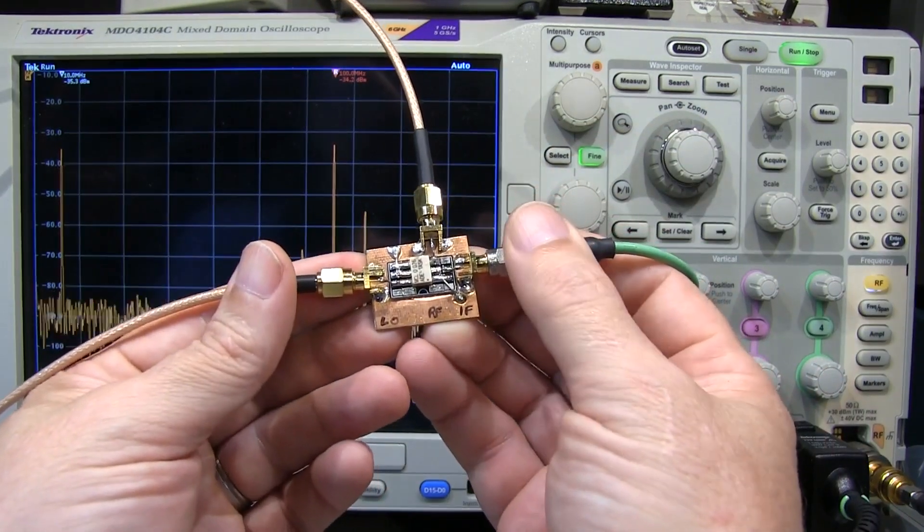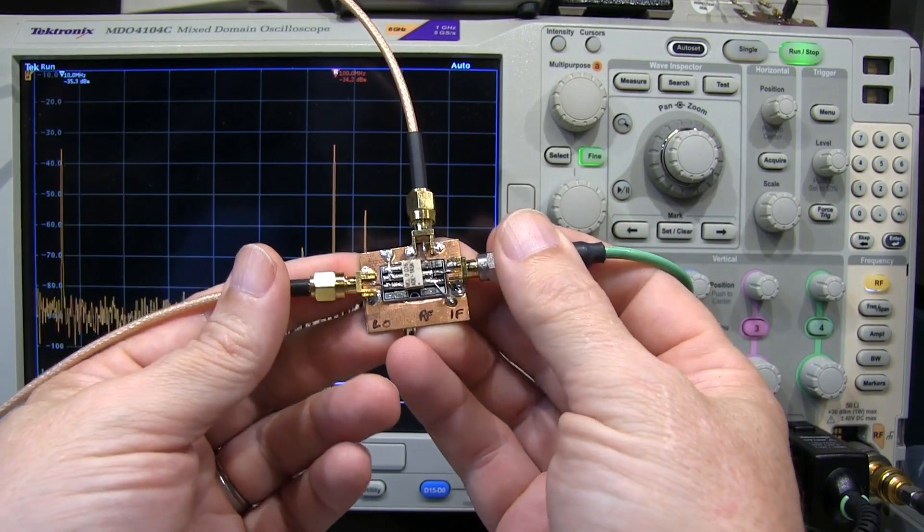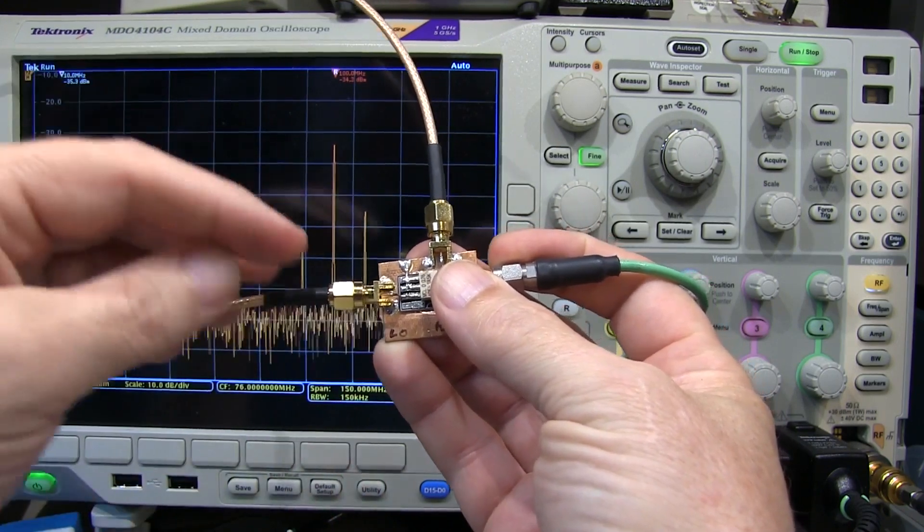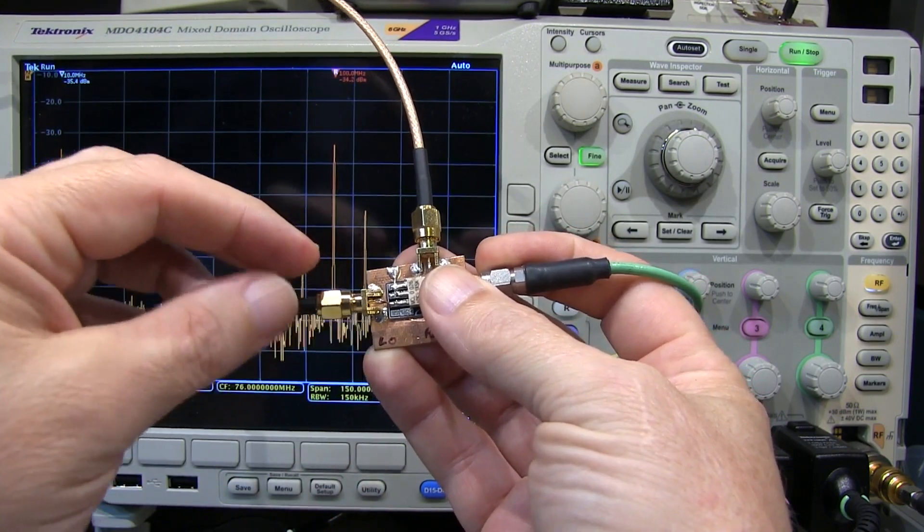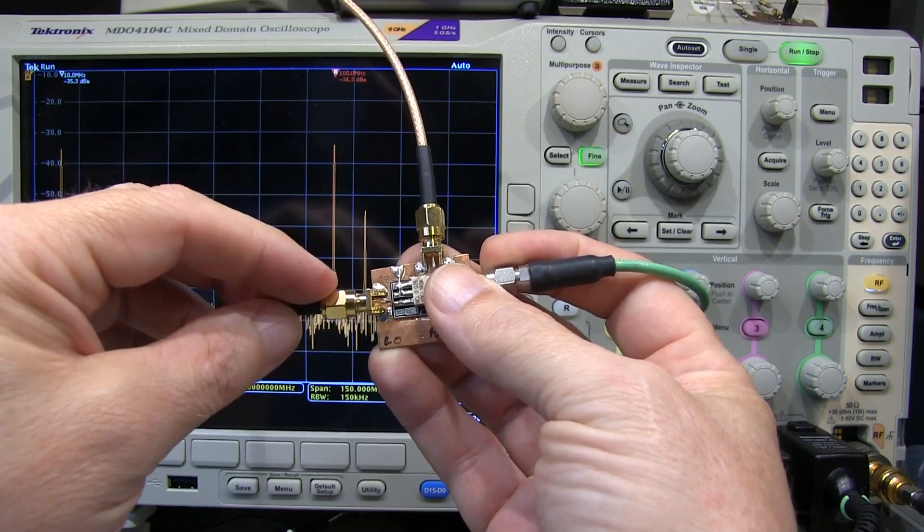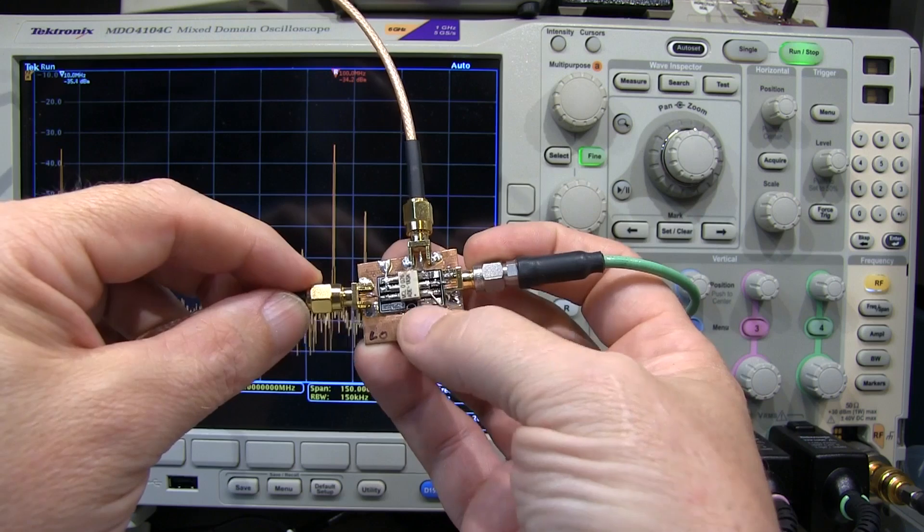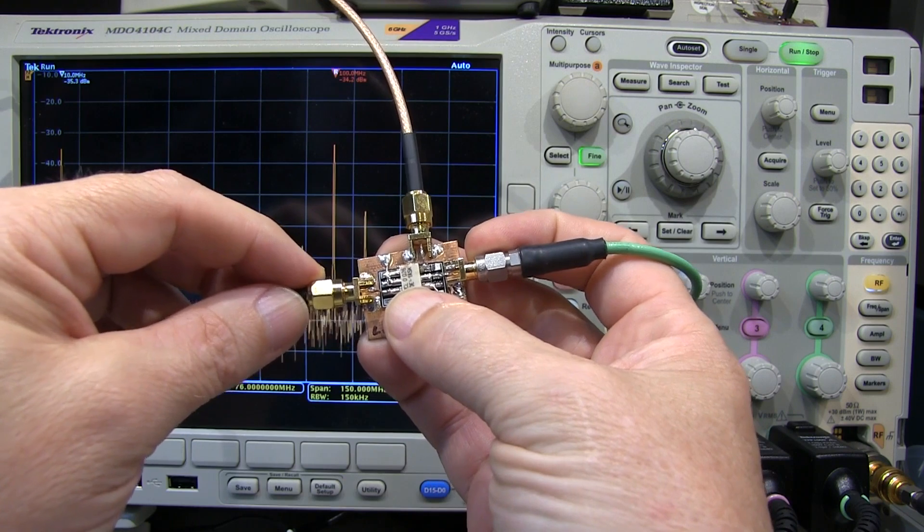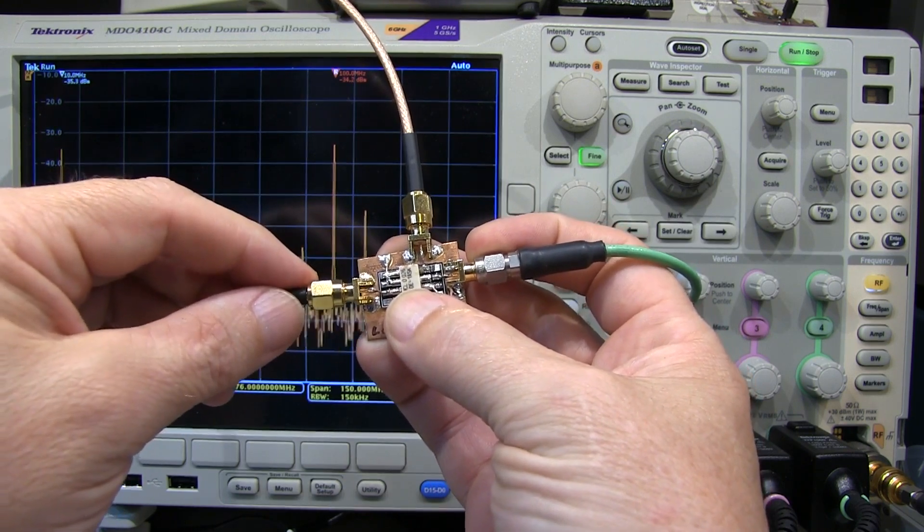Now, a subtle thing that's interesting to note is that when we talk about a level 7 mixer like this one, that refers to the amount of drive power plus 7 dBm as measured into a 50 ohm load. But, a mixer's input is not going to be a perfect 50 ohm load. It may have an SWR of about 2.5 to 1.